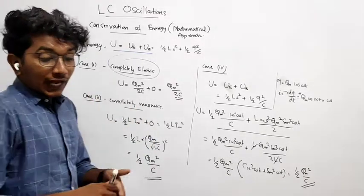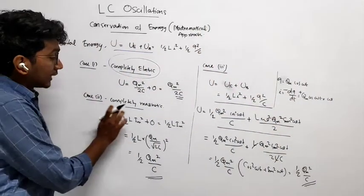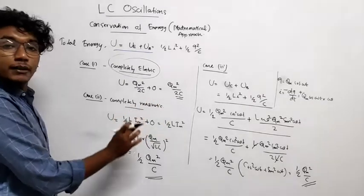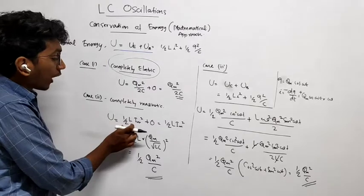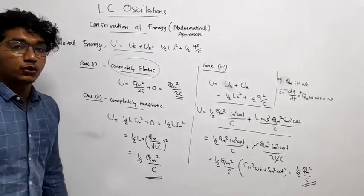So now we are going to prove that both the values are equal. In case two it is completely magnetic where Ue will be equal to zero. So U is equal to half into LIm squared plus zero, that is equal to half into LIm squared.